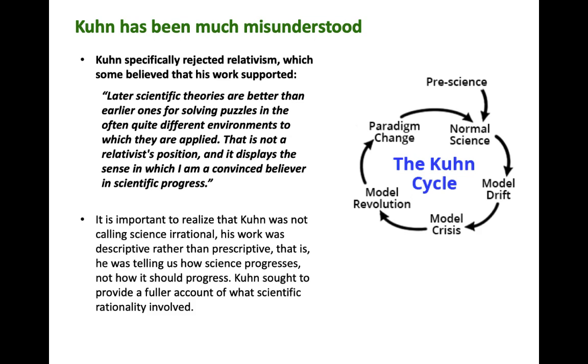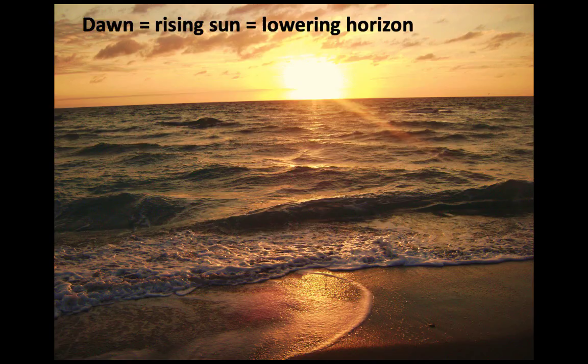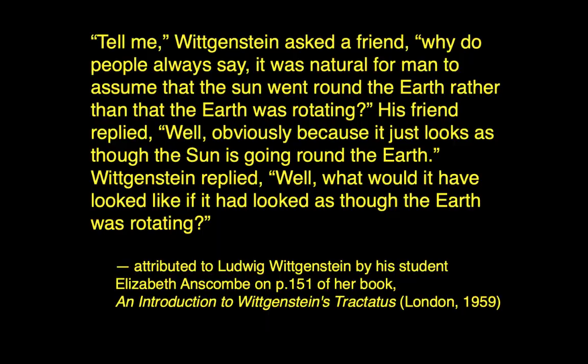The dawn is another way of describing the rising of the sun, which is another way of describing the lowering of the horizon — all the same phenomenon, different language, different paradigms. Tell me, Wittgenstein asked a friend, why do people always say it was natural for man to assume that the sun went around the earth rather than that the earth was rotating? His friend replied: well, obviously because it just looks as though the sun is going around the earth. Wittgenstein replied: well, what would it have looked like if it had looked as though the earth was rotating? The point was — it would have looked exactly the same. So we can't fault people for believing that the sun went around the earth.